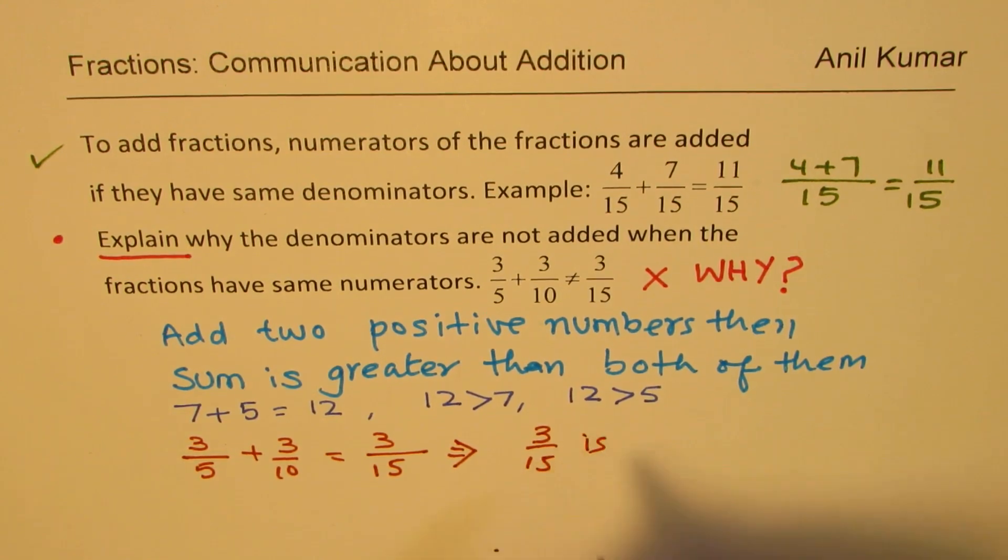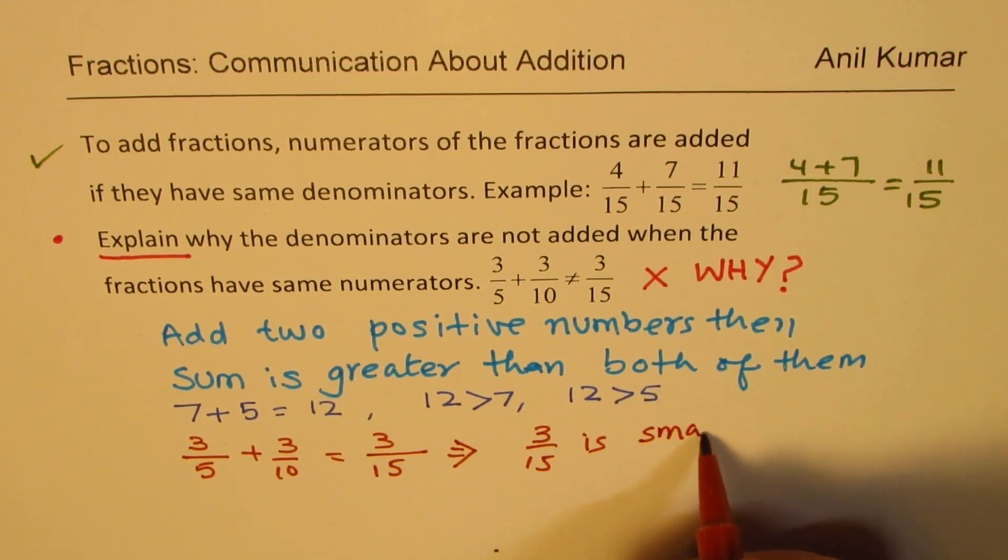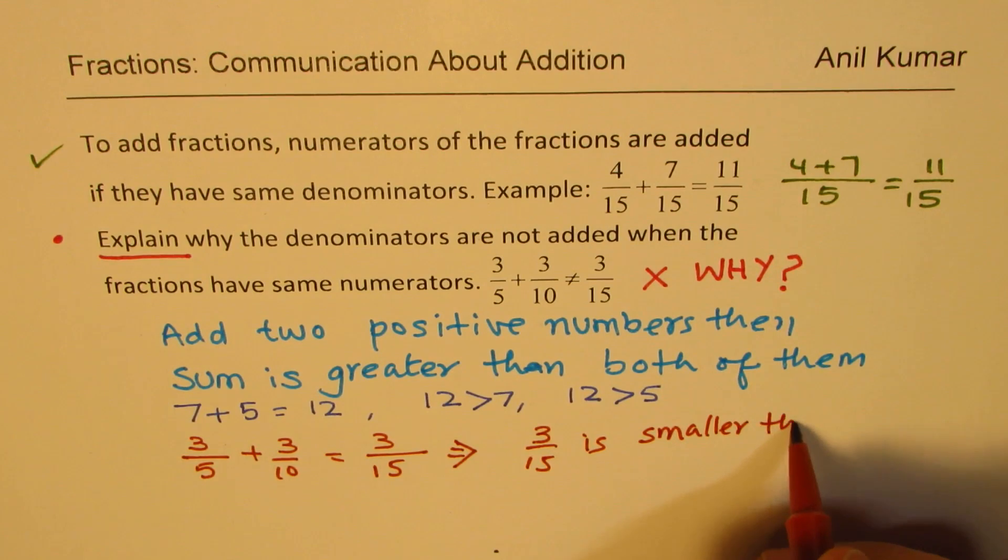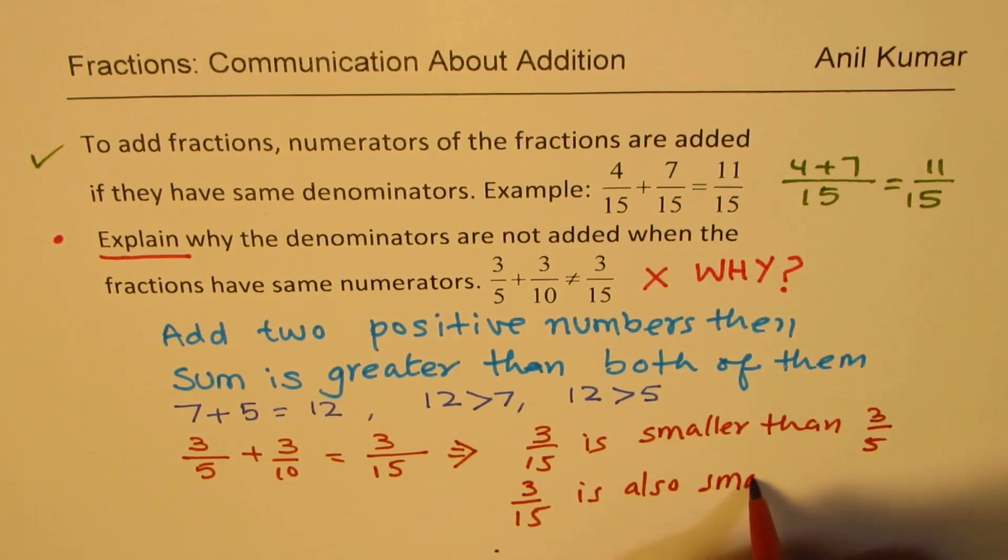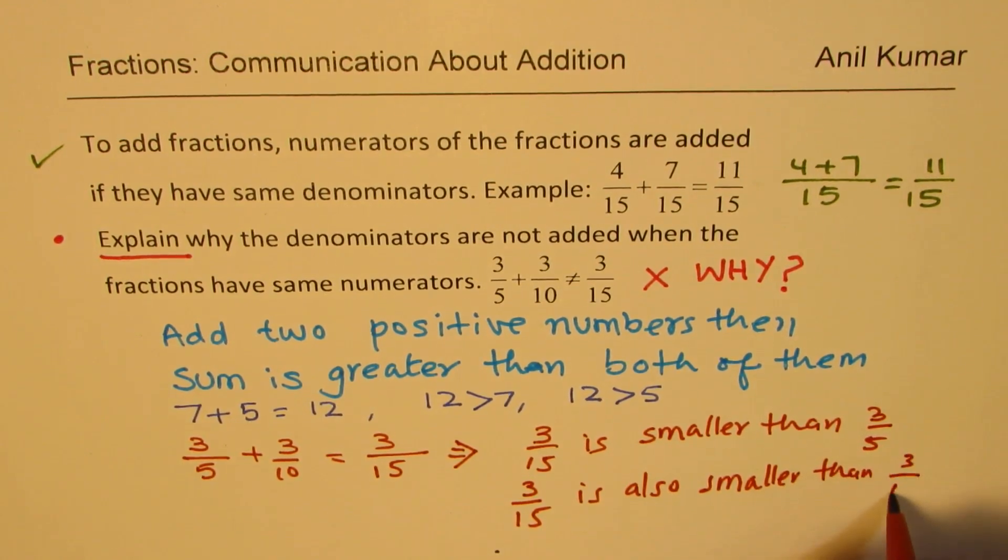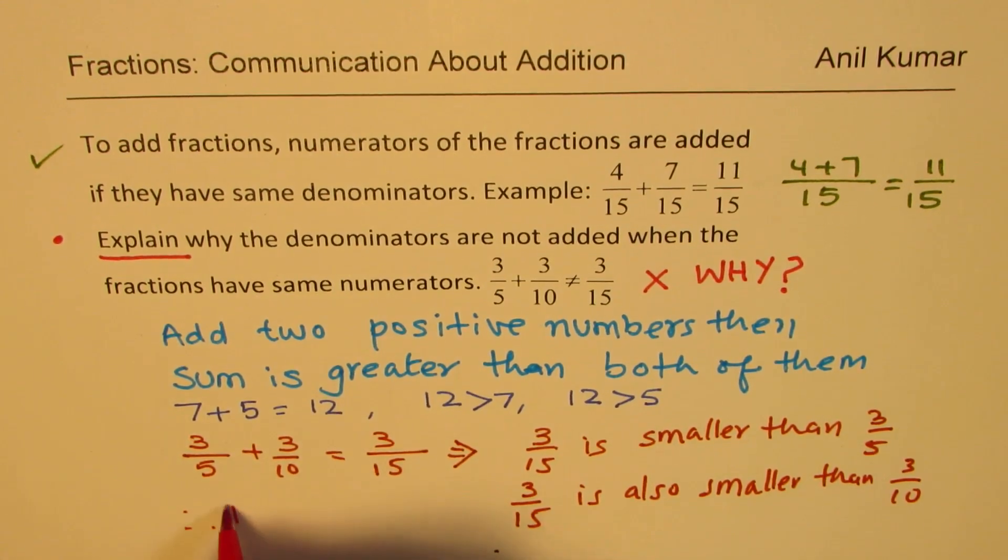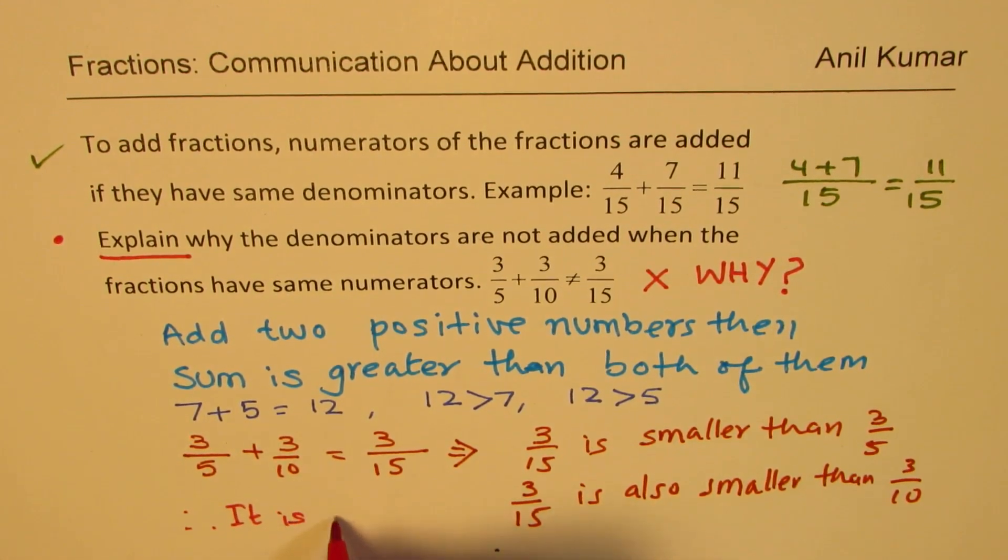So that gives you a number, 3 over 15, is smaller than 3 over 5 and 3 over 15 is also smaller than 3 over 10, correct? Therefore, it is incorrect.